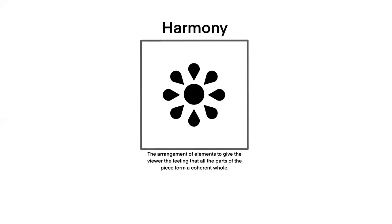Our last principle is movement. Movement is the use of recurrent elements to direct the eye through the image. The way the elements are organized to lead the eye to the focal area. The eye can be directed, for example, along edges or by means of shape and color. In this composition, our eye is drawn to either the top left corner or the bottom right corner of the square by the pink circles.